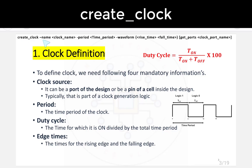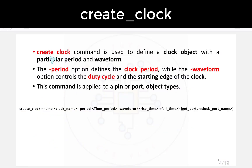The command syntax is: create_clock -name [clock name] -period [time period] -waveform [rise time fall time] [get_ports]. The -period option defines the clock period, while the -waveform option controls the duty cycle and starting edge of the clock. This command is applied to a pin or port object type.